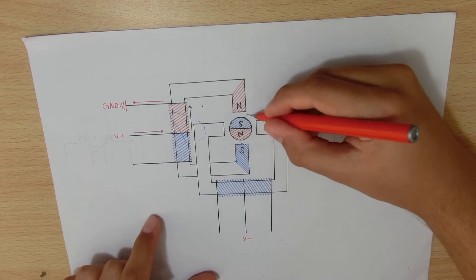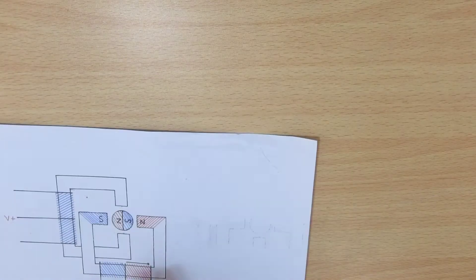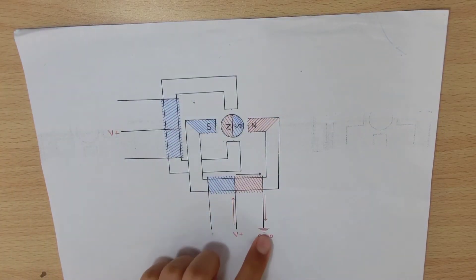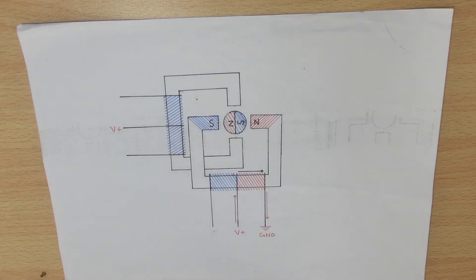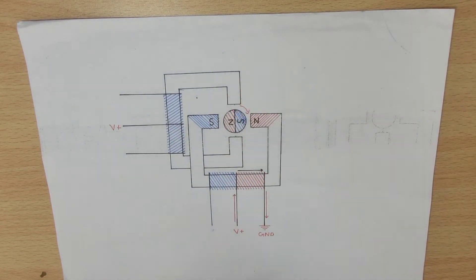The rotor rotates clockwise so that the opposite poles are facing each other. Now we attach B2 to ground and again north and south poles are created. The rotor rotates clockwise so that the opposite poles are facing each other.